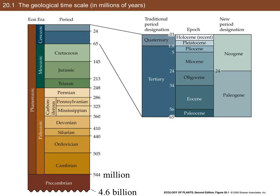And the Holocene is what happened before today. Some people say we live today in the Homogenocene, where everything's becoming the same. Plants arose sometime in the Paleozoic era, and that's what we'll talk about today.